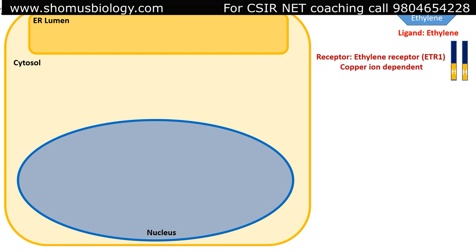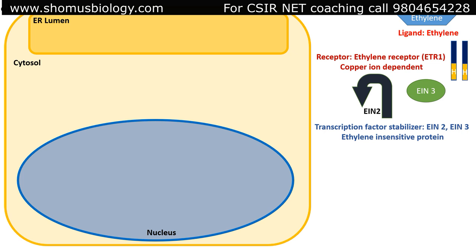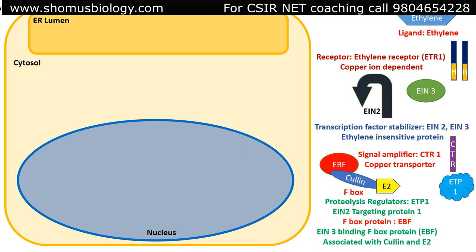Ethylene acts as the ligand. The receptor is ETR1 (ethylene receptor 1), a copper ion-dependent receptor. Transcription factor stabilizers include EIN2 and EIN3 — ethylene insensitive protein 2 and ethylene insensitive protein 3. The signal amplifier is CTR1, the copper transporter. Additional proteins include ETP1 (ein2 targeting protein 1), a proteolysis regulator that adds polyubiquitin to target proteins for destruction, and the F-box protein EBF (EIN3-binding F-box protein) associated with a ubiquitin E2 ligase.